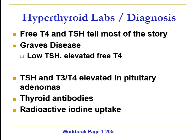If you look at the labs, your TSH level and your free T4 can tell most of the story. In Graves' disease, you're going to have a low TSH level and an elevated free T4 level. Those elevated T3 and T4 levels help turn on the negative feedback mechanism to the pituitary and shut off TSH production. If you have an adenoma in the pituitary gland — a different cause — you can see abnormally high TSH levels as well as elevated T3 and T4. For diagnostics, they can get thyroid antibodies and, in some cases, radioactive iodine uptake, though it's lost a little favor over the years.